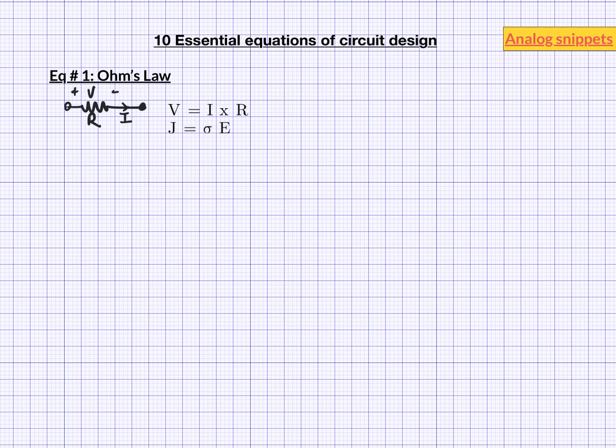Here J is the current density, sigma is conductivity and E is applied electric field. From some simple manipulations we can derive Ohm's law from this equation. Here A is the area and L is the length of the material.